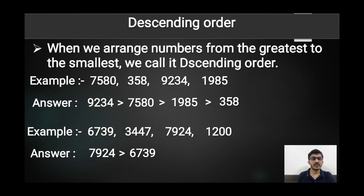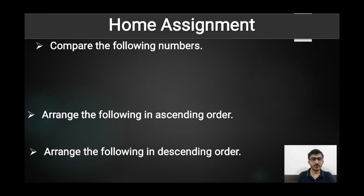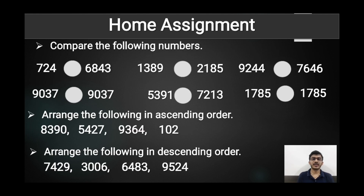Now there is some assignment work for you to do at home. The first question is to compare the given numbers using greater than, less than, and equal to signs. In the second question, arrange all the numbers in ascending order. In the last question, arrange all the numbers in ascending order.